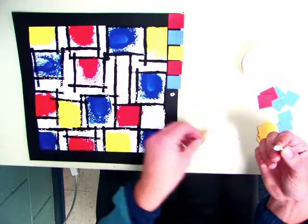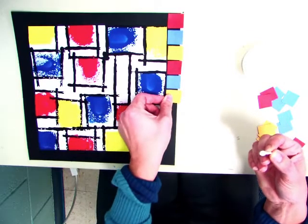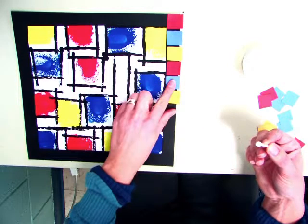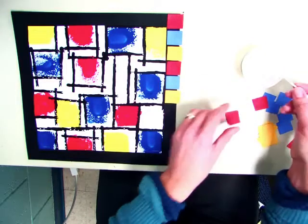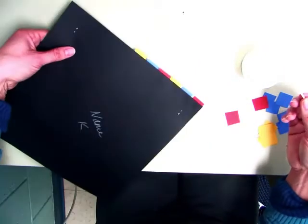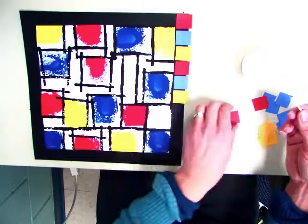So once I have it started, I can just start going all the way around. Notice I'm keeping a little bit of black space in between, I'm not overlapping, and I'm trying to put them on nice and straight. They do hang off the frame a little bit, but that's what gives it a little bit of texture and interest.